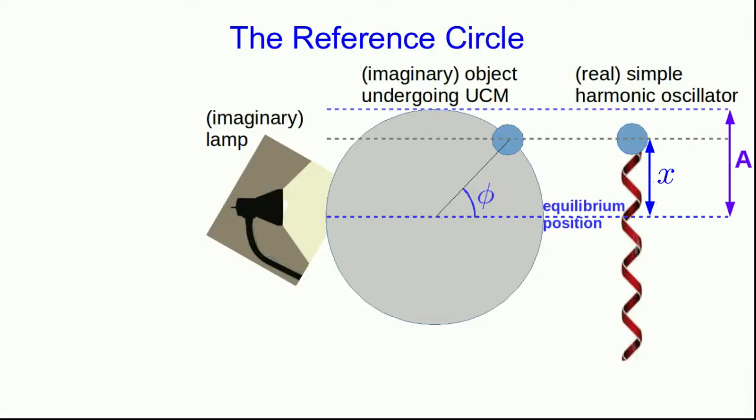This close relationship between uniform circular motion and simple harmonic motion is going to be useful to us because simple harmonic motion is a little bit complicated. It's motion with a non-uniform acceleration, but this relationship lets us relate it to uniform circular motion, which at least is motion with a constant speed.